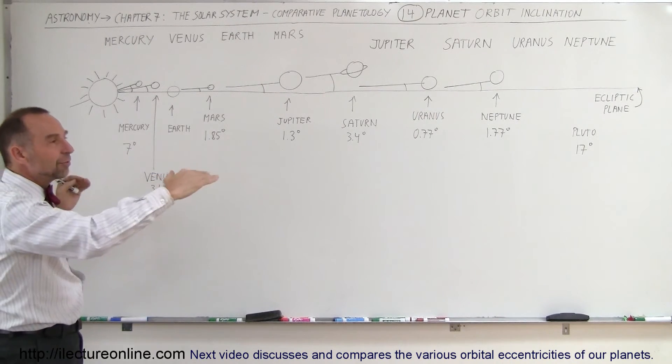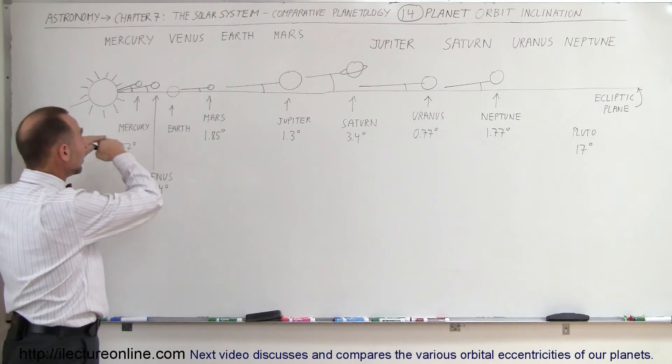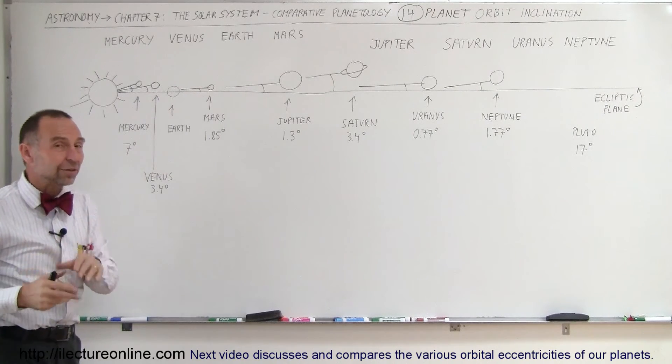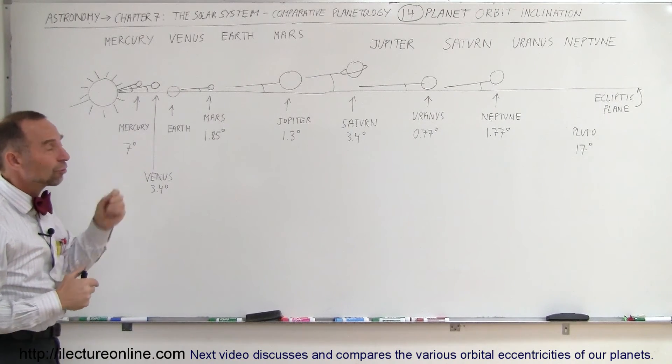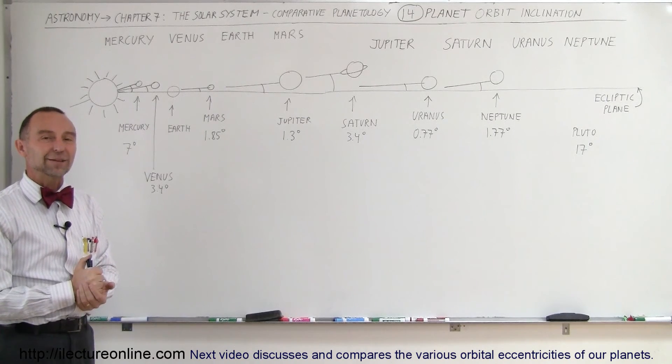And so the shape of the solar system is basically like a pancake shape. We have the Sun in the middle, and then we have all the planets lined up pretty well close together near that ecliptic plane with just a few degrees difference in each case. And that's what we mean by orbit inclination of the planets.